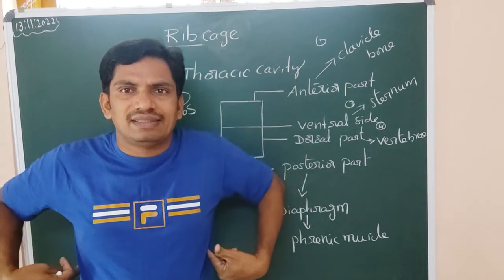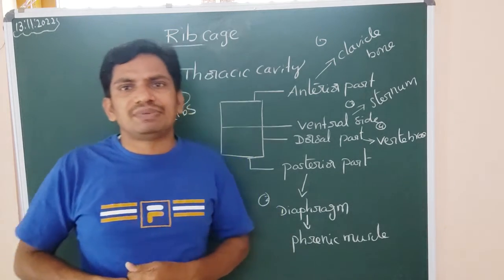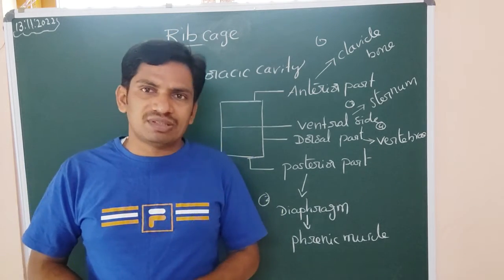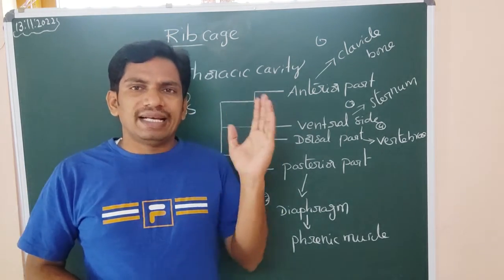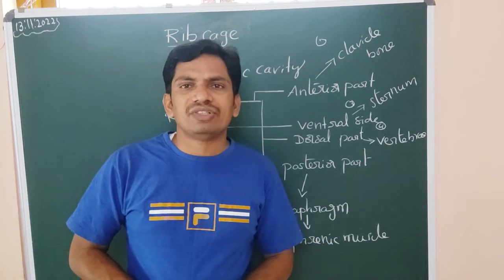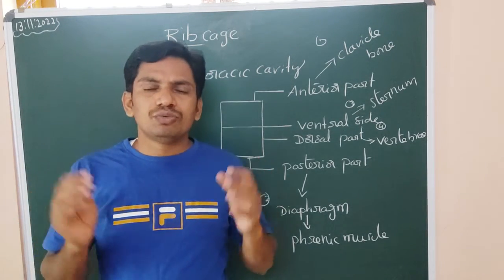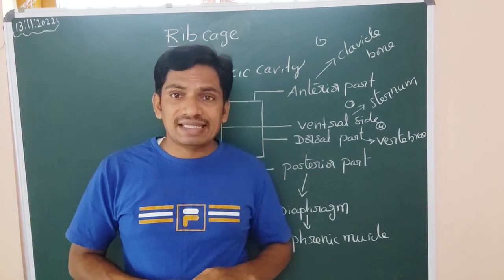So here the sternum - to the sternum these 12 pairs of ribs are attached. True ribs are there and false ribs are there and floating ribs are there. 7 and 8, 9, 10 and last pair also there, which is the floating ribs. These will be able to protect the lungs safely.